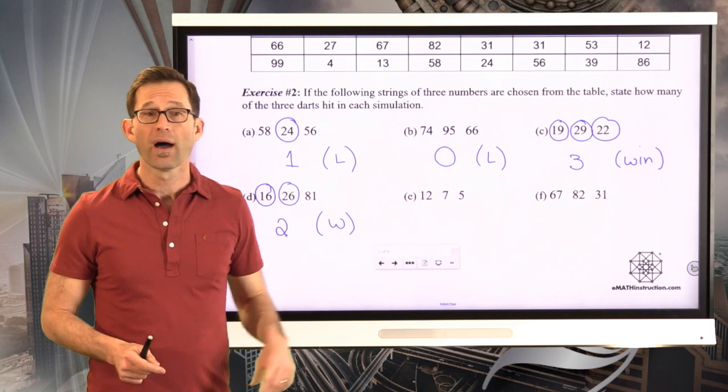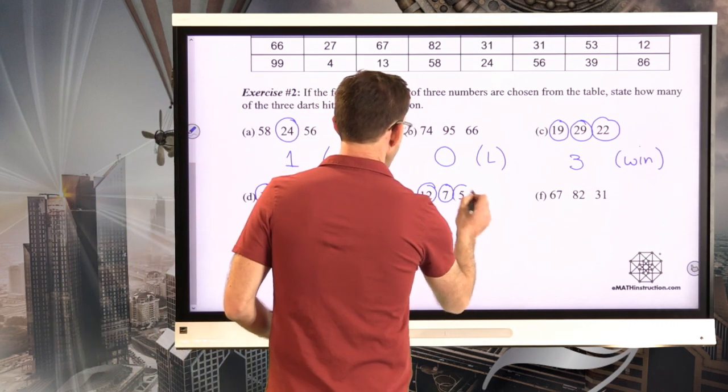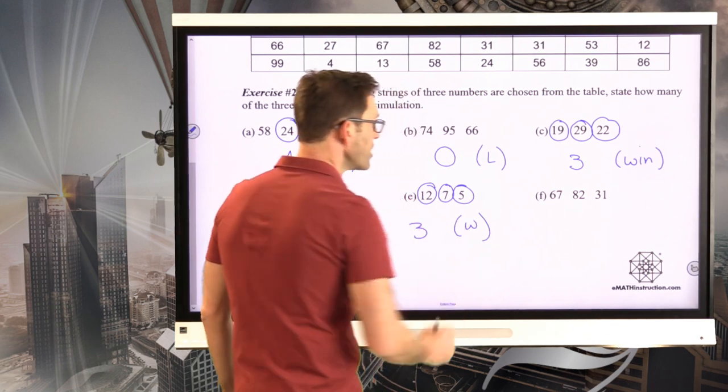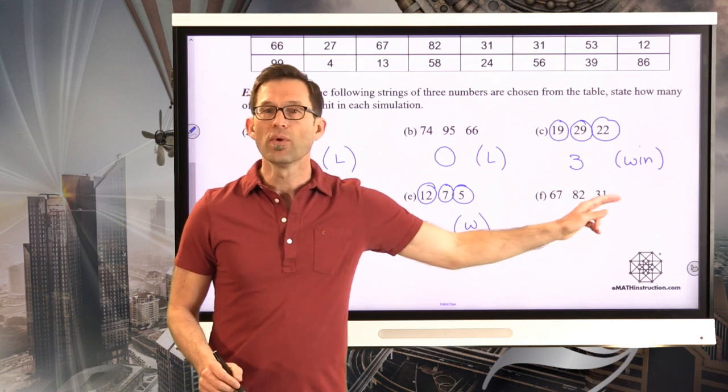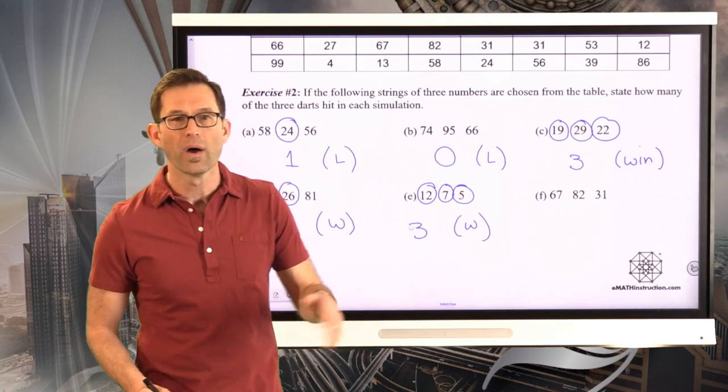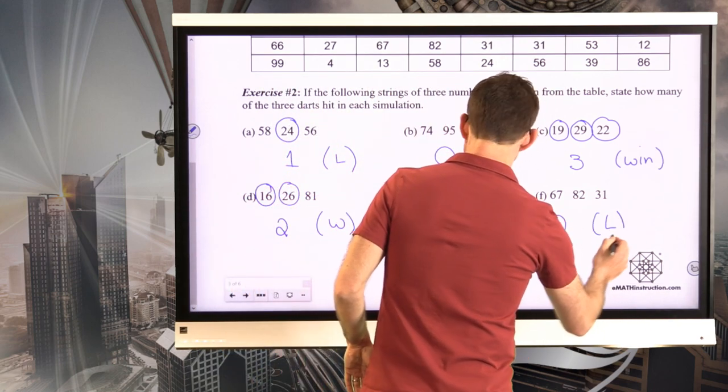All right. Well, 12, 7, 5, those are all good. They're all between 1 and 30, so that would be three darts in. That would be a win. 67, 82, and 31. 31's close, but close doesn't count in this case. You've got to be 1 to 30, so none of these would be in, and that would be a loss.